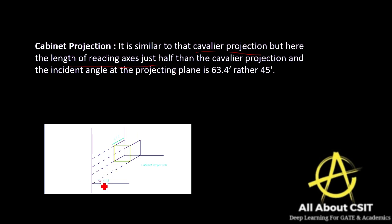In cabinet projection the incident angle is 63.4 degrees rather than 45 degrees as in cavalier. Oblique projections are not perpendicular to the view plane — not 90 degrees — whereas in orthographic the image must be 90 degrees to the view plane.